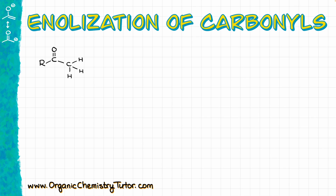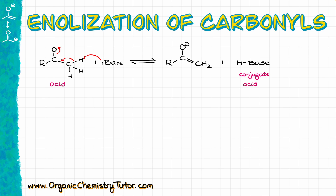So if we start with some sort of a carbonyl and we react it with the base, that base can come in and snatch one of the protons in the alpha position, giving us the corresponding enolate plus the conjugate acid. From the acid-base perspective, in this reaction we have our acid on the left side and we have the conjugate acid on the right side.